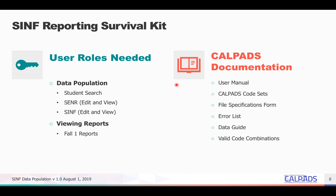To successfully report your student data in CALPASS, LEAs need proper user account roles assigned. At a minimum, you would need these roles to process student information in CALPASS. For data population, you would need the Student Search, SENR Edit and View, as well as SINF Edit and View roles. To view the content of your student information data on reports, at a minimum, you would need the Fall 1 Reports role.